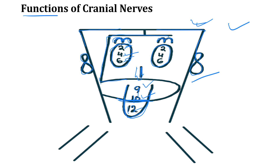Cranial nerve 10 is the vagus nerve — a mixed sensory and motor cranial nerve. Its sensory function gives the sense of taste to the epiglottis, not the tongue. Its motor functions are responsible for swallowing, talking, and coughing. Cranial nerve 12 is the hypoglossal nerve, drawn on the tip of the tongue — a purely motor nerve responsible for tongue movement.